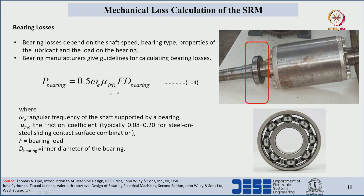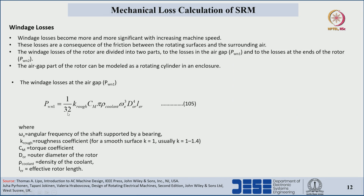The bearing loss equation is the same for both induction machines and switched reluctance machines. Here ωe represents the angular frequency of the shaft, μ represents the frictional coefficient, f represents the load acting on the bearing, and d is the inner diameter of the bearing. Windage losses are calculated based on a corresponding equation, which has already been discussed in detail.